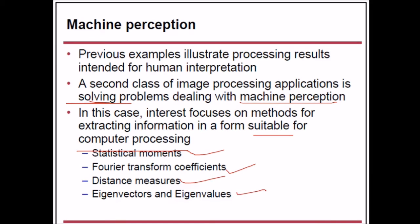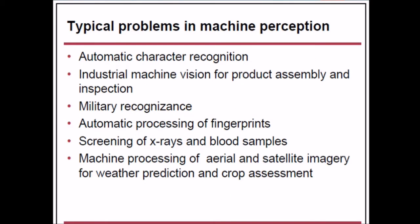Problems in machine perception include: automatic character recognition, industrial machine vision for product assembly and inspection, military reconnaissance, automatic fingerprint processing, screening of X-rays and blood samples, and machine processing of aerial and satellite imagery for weather prediction and power management — such as the various Landsat bands we discussed.